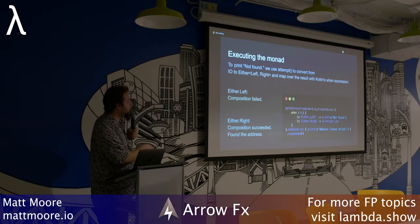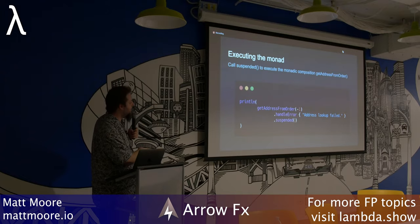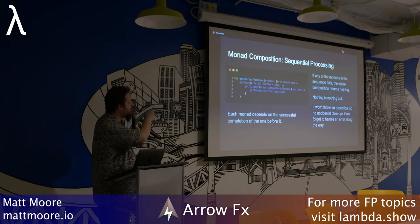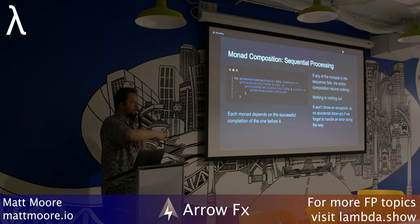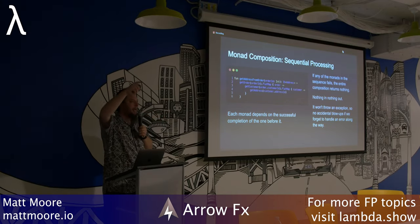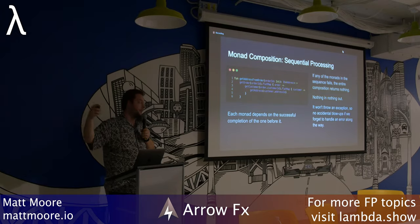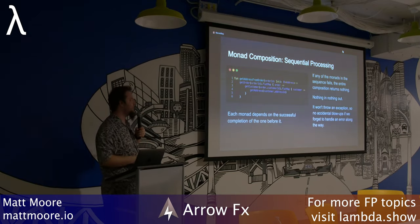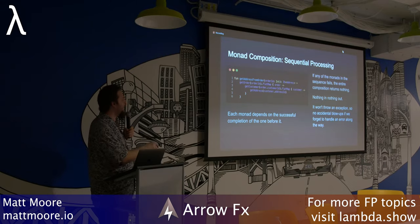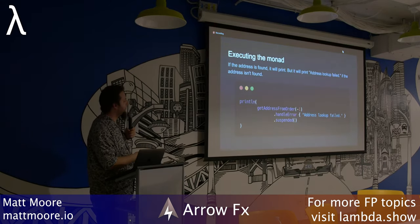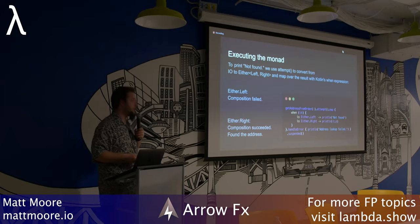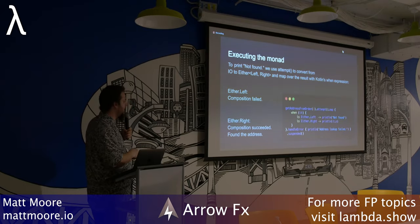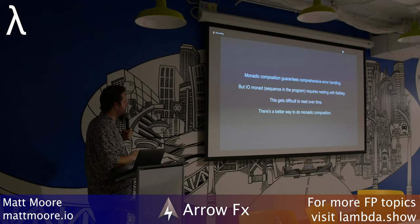Putting all these things together, you'll notice we're starting to get a nesting thing going on — calling flatMap, then nesting, then flatMap. As you add more operations, it nests deeper and deeper, which gets a little annoying. There's a term for this in the Ruby community — I call it arrow-style programming — not to be confused with the Arrow library. We want the safety guarantees but without that weird nesting.